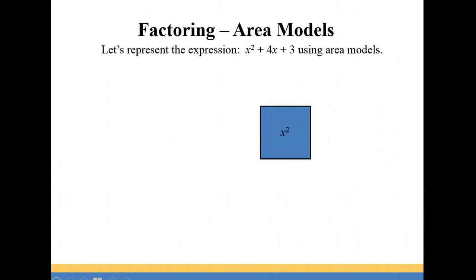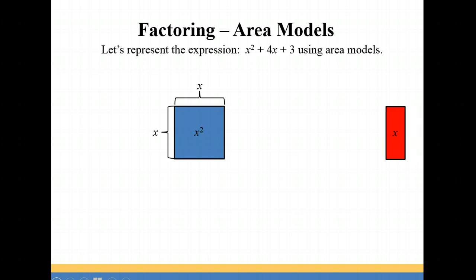Our first area model is the x squared. It has an area of x squared, which means that it must have lengths of x and x. Our next rectangle has an area of x, which tells us that the sides must have lengths of 1 and x. Then we also need a unit model, so we're going to do a square of sides of 1. So 1 by 1 square gives us an area of 1 square unit.